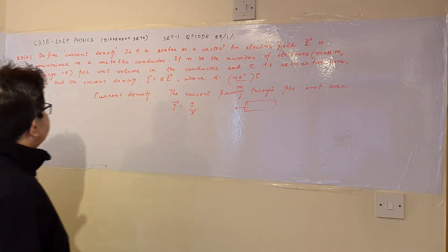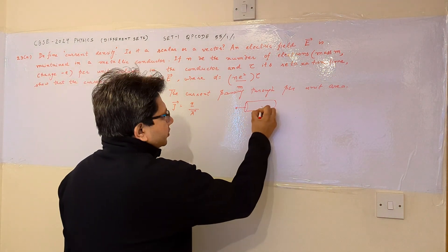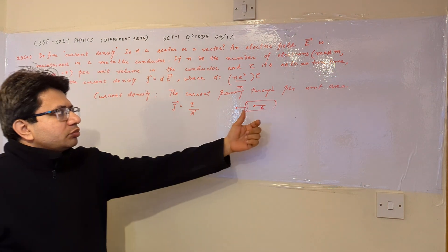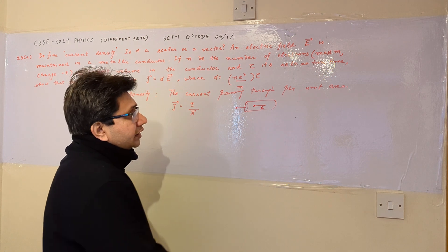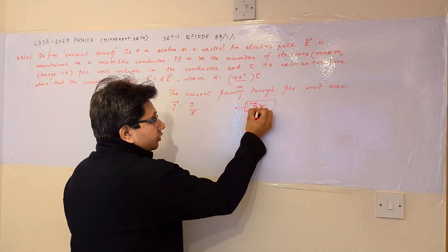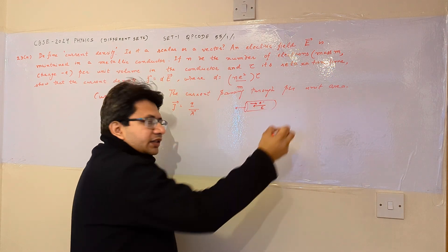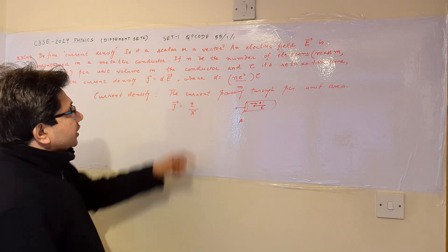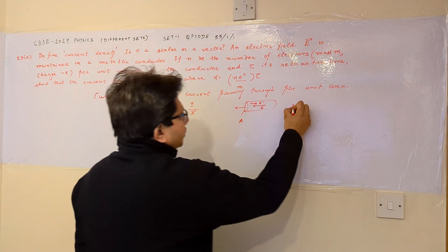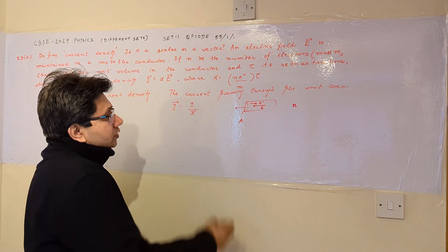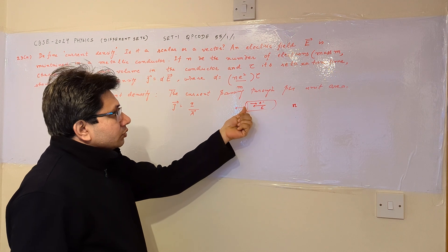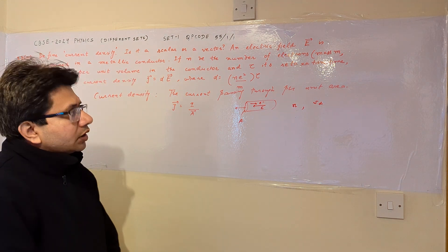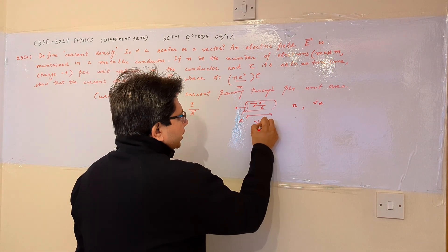For the second part, we have a metallic conductor with an electric field present. Suppose its direction is from right to left. In a metallic conductor, the main charge carriers are electrons, so the electrons drift from the left-hand side to the right-hand side. If A is the cross-sectional area and n is the number of electrons per unit volume, and an electron passes from one point to another in time interval Δt with drift velocity vd, then it covers a distance of vd·Δt.